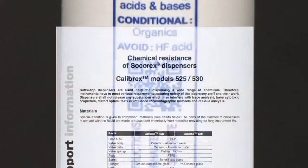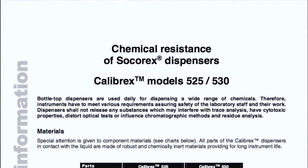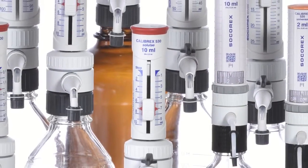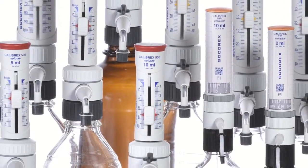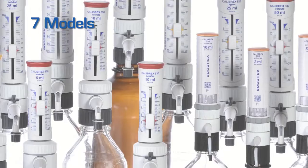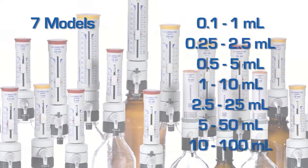Both Calibrex Dispensers exhibit excellent chemical resistance and come with a QR code that enables instant access to a chemical compatibility chart. Both the Calibrex Organo 525 and Salute A530 are available in 7 volume ranges from 0.1 milliliters to 100 milliliters.